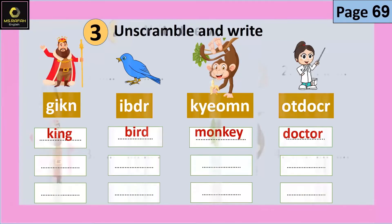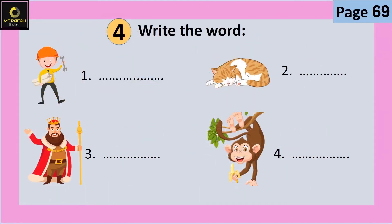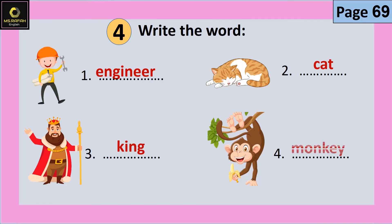Number four: Write the word — أكتب الكلمة. Engineer. Cat. King. Monkey.